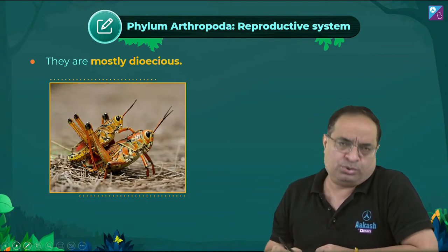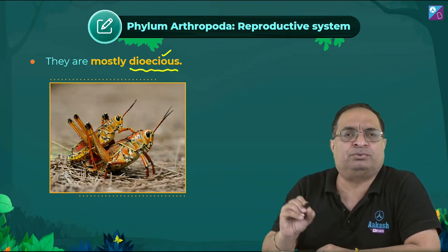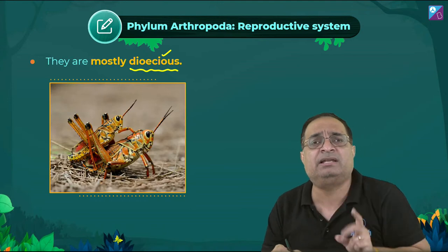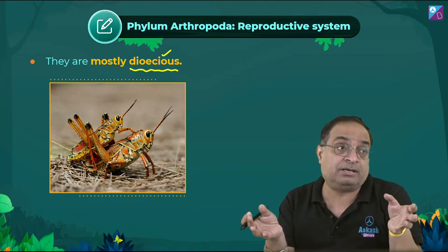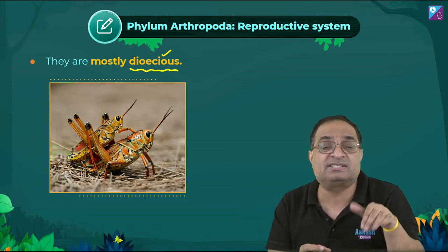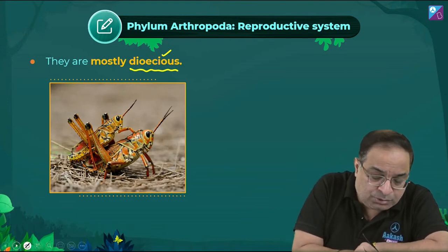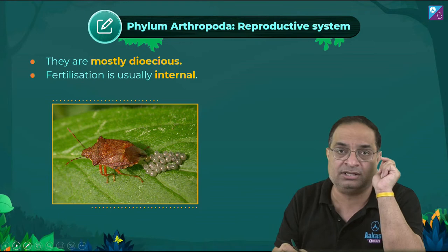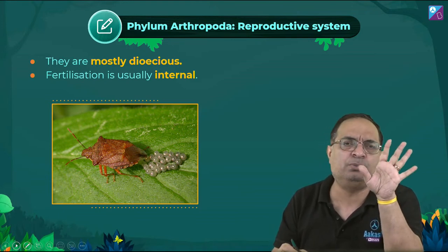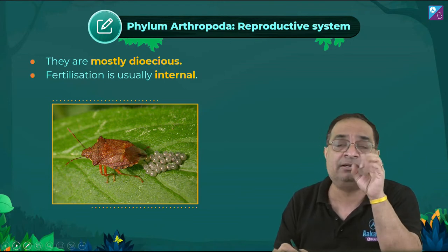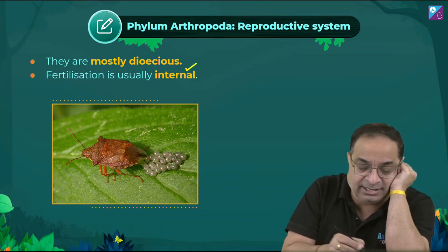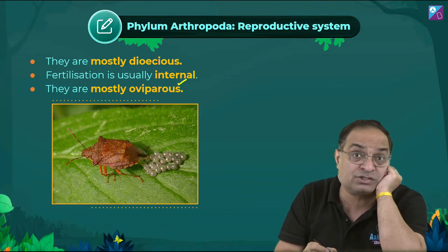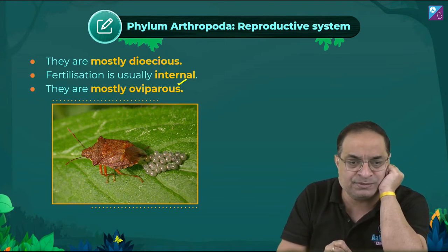Arthropods are dioecious (unisexual) — male and female are separate and can often be distinguished visually. Fertilization is internal — male deposits sperms into the body of the female. Most arthropods are oviparous; some like scorpions are ovoviviparous — they give birth to young ones, but this is not true viviparity as no true placenta is formed. True placenta forms only in placental mammals.